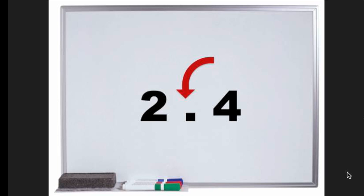This dot here shows us that this number is not 24. This is our whole number, or our unit. We have two units. This is called a decimal point, and this is how many tenths we have.